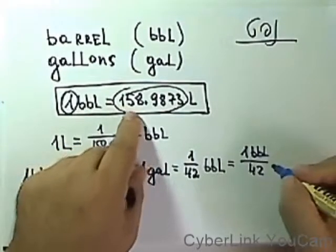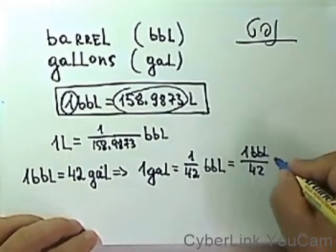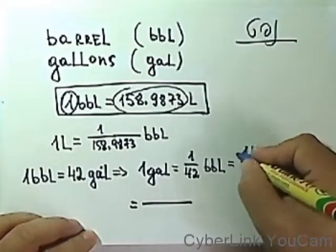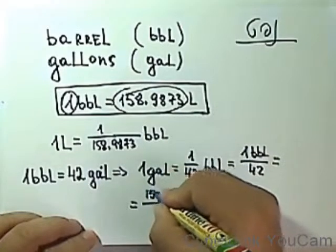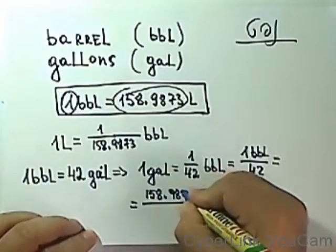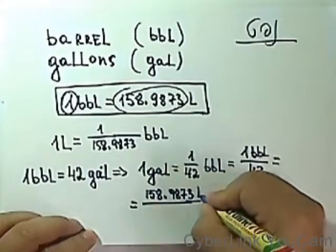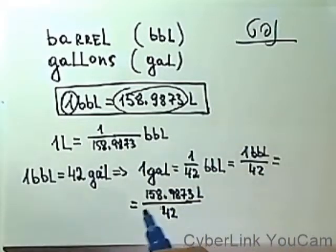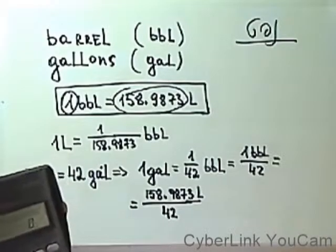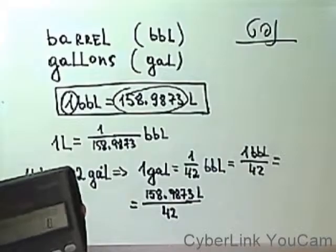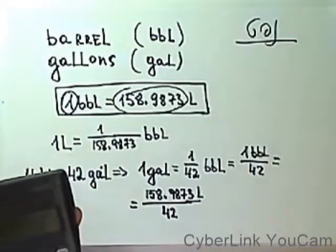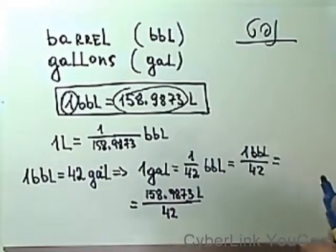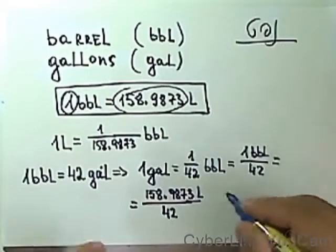So one gallon equals 1 divided by 42 barrels. But we know that one barrel equals 158.9873 liters.